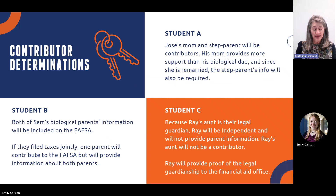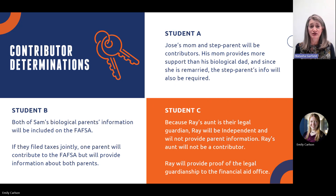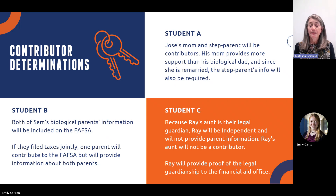For student B: Sam's biological parents were never married, but they lived together. In this situation, both of Sam's biological parents will need to be included on the FAFSA. If the parents file taxes jointly, one parent will need to have an account and will contribute to the FAFSA, providing information about both parents. If the parents don't file taxes jointly, then each parent will need to have their own account and each will provide information on the FAFSA.